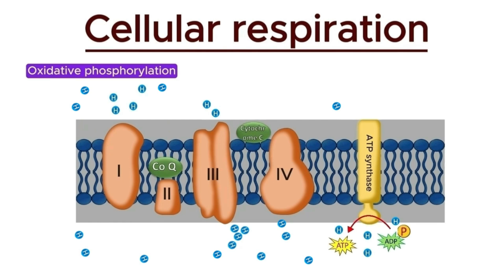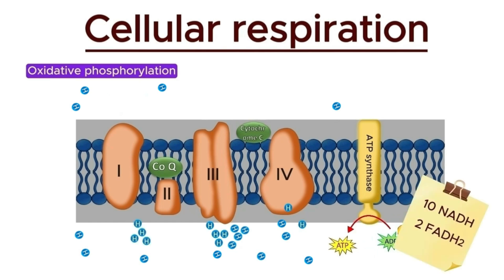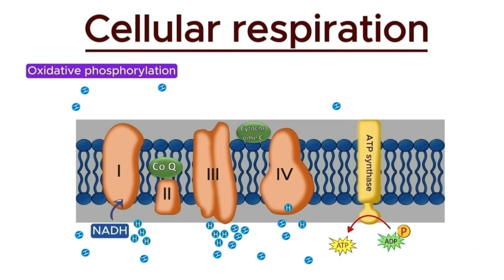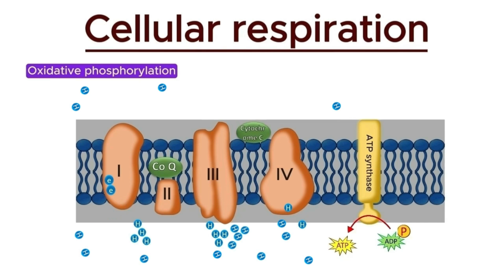This process generates the majority of ATP during cellular respiration. Now let's see how these twelve carriers produce ATP. NADH molecules enter the electron transport chain at complex one, while FADH2 enters at complex two. When one NADH is oxidized, it transfers electrons to complex one. As electrons move through the electron transport chain, they drive the transport of protons across the inner mitochondrial membrane.